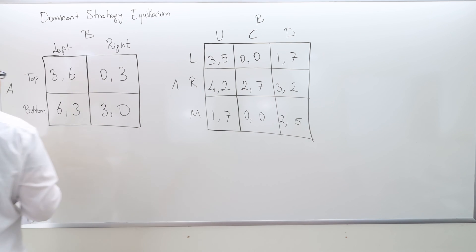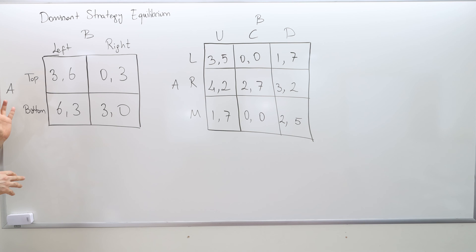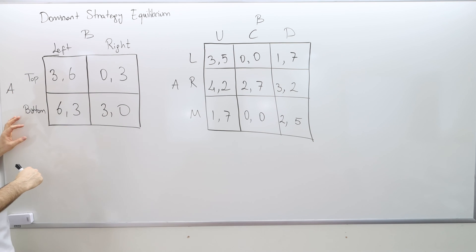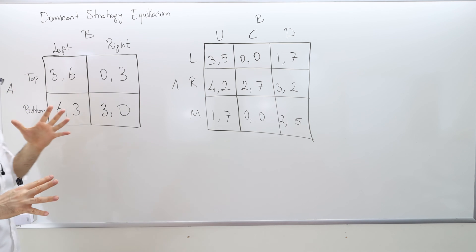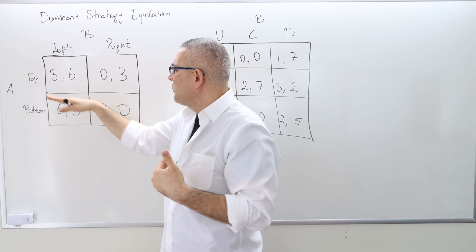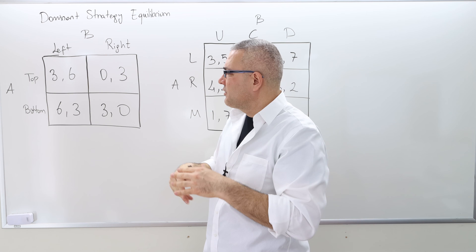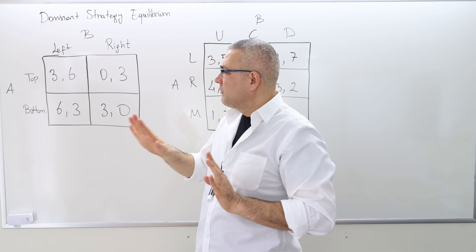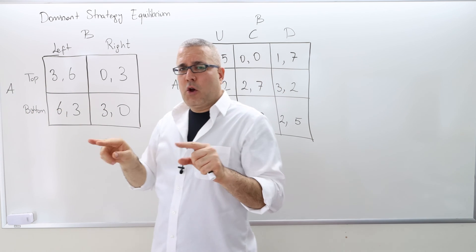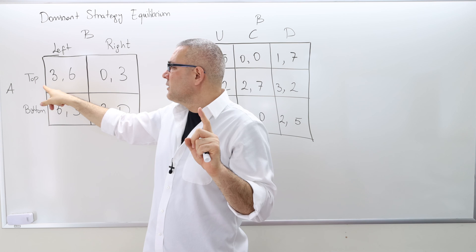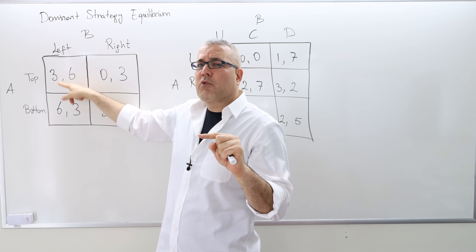The first question we need to ask: is there any dominant strategy — a strategy that dominates the other? It doesn't really matter which player we look at first. Let's look at player A, the row player. Is there a dominant strategy — a strategy always giving him a higher payoff? Because player A is the row player, we compare the first numbers across rows.